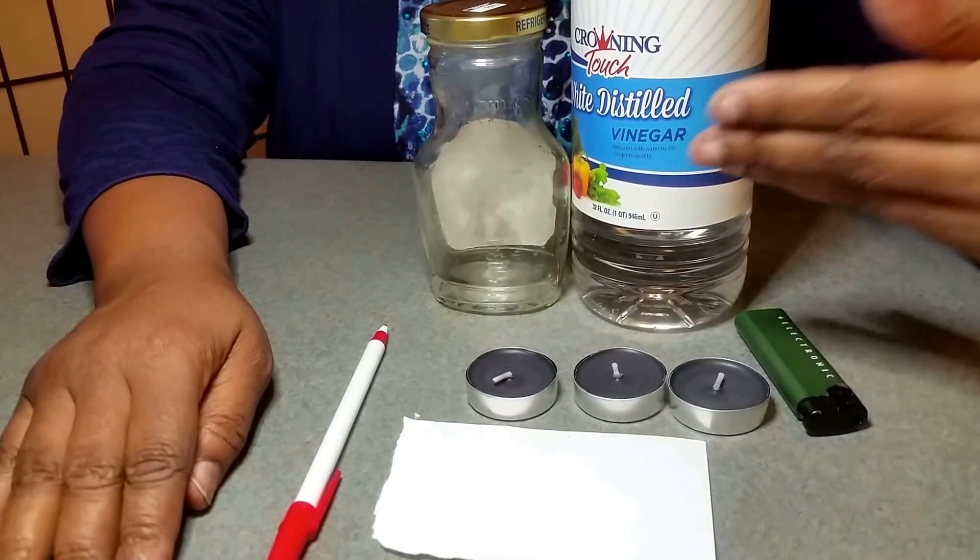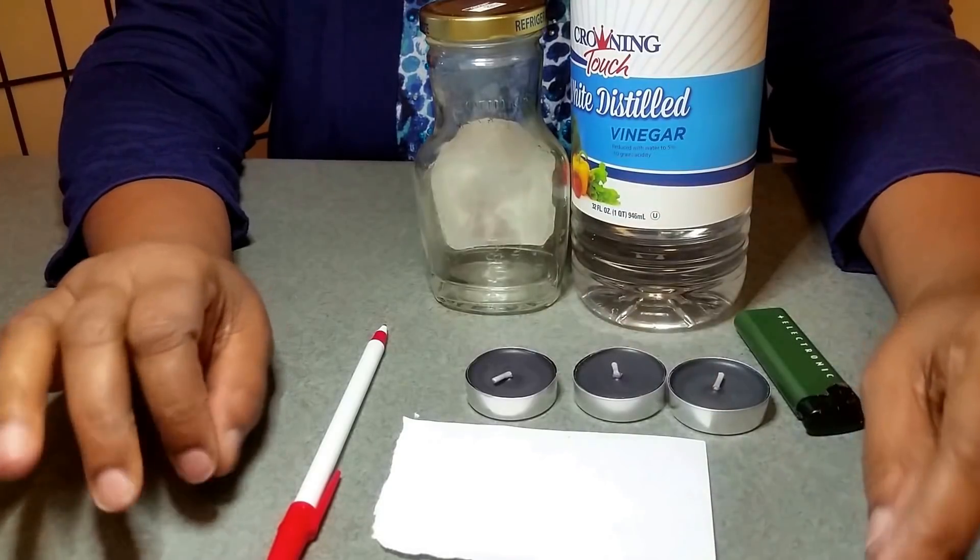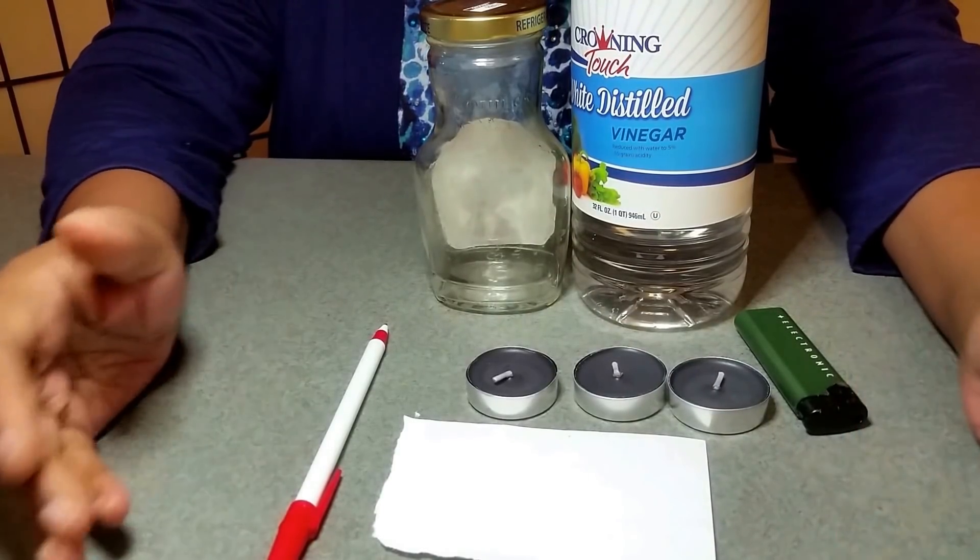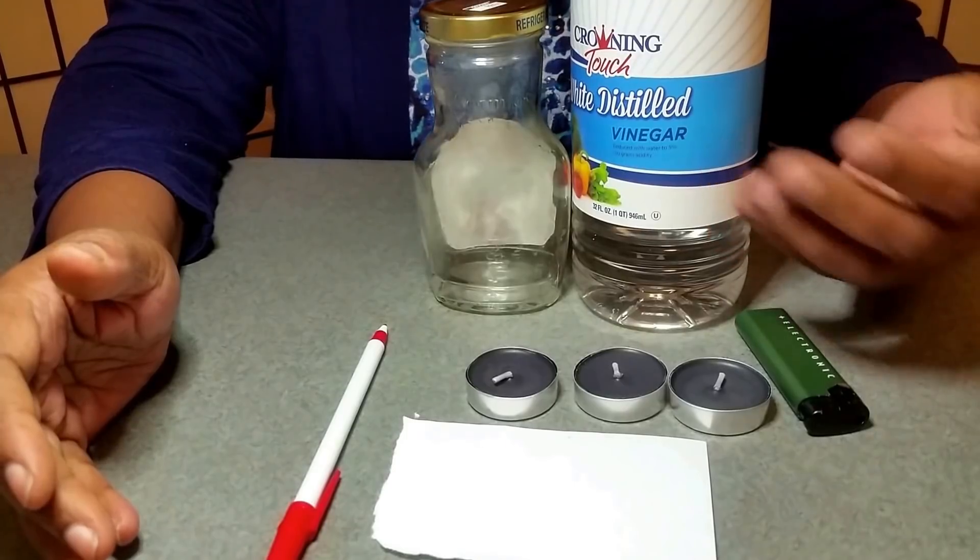Again, what you see in front of you is all that you need. Vinegar, jar, and three candles that are black, a piece of paper, and a pen. And of course, your lighter.